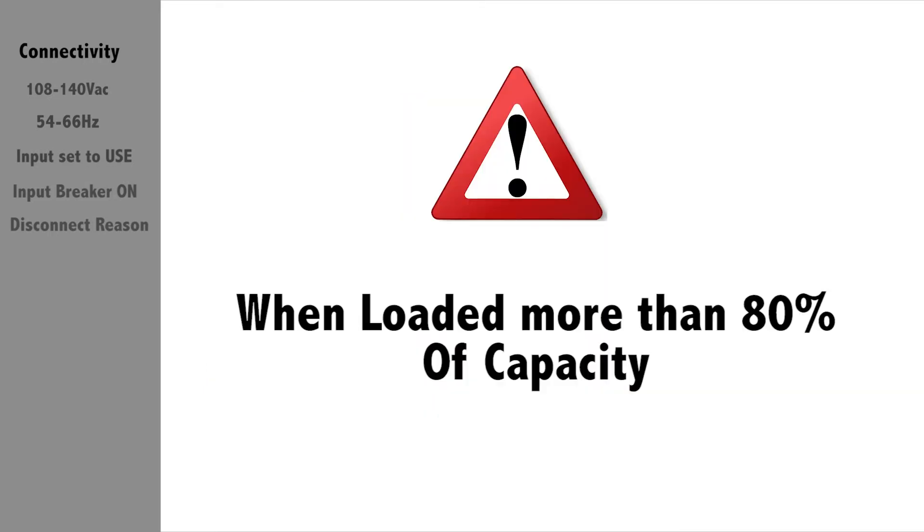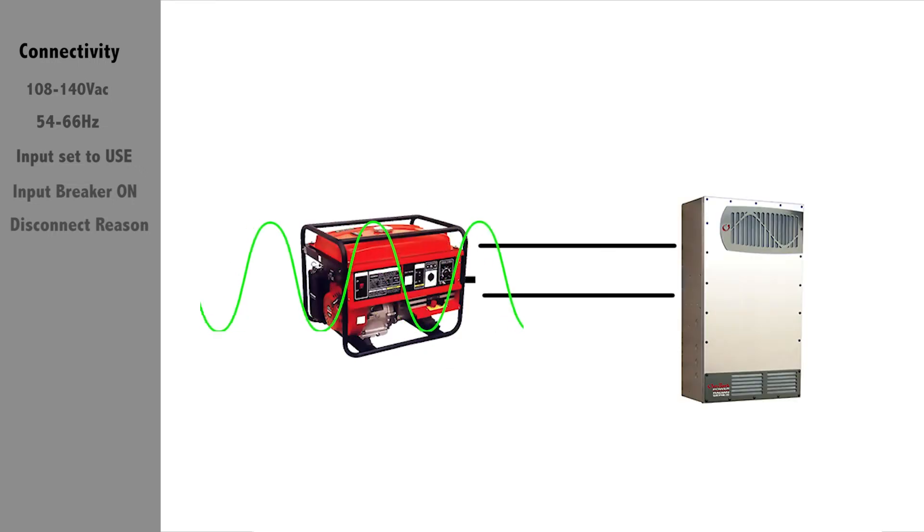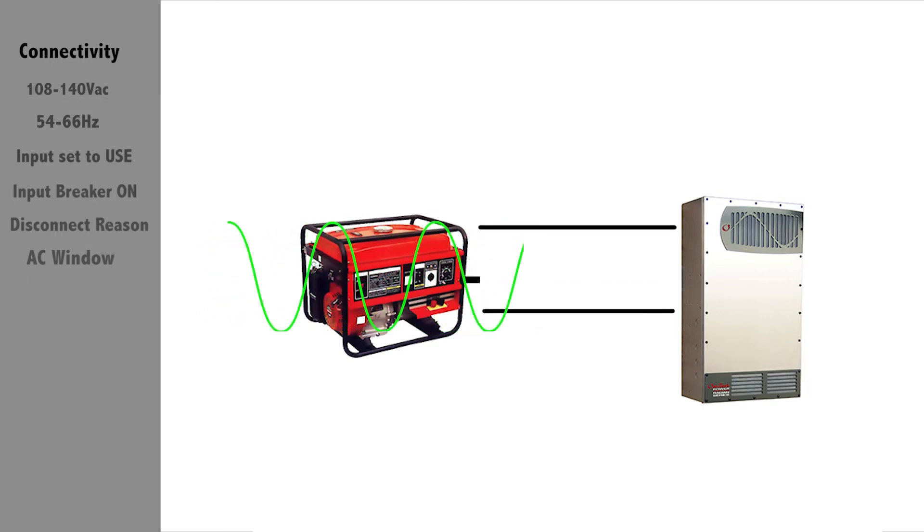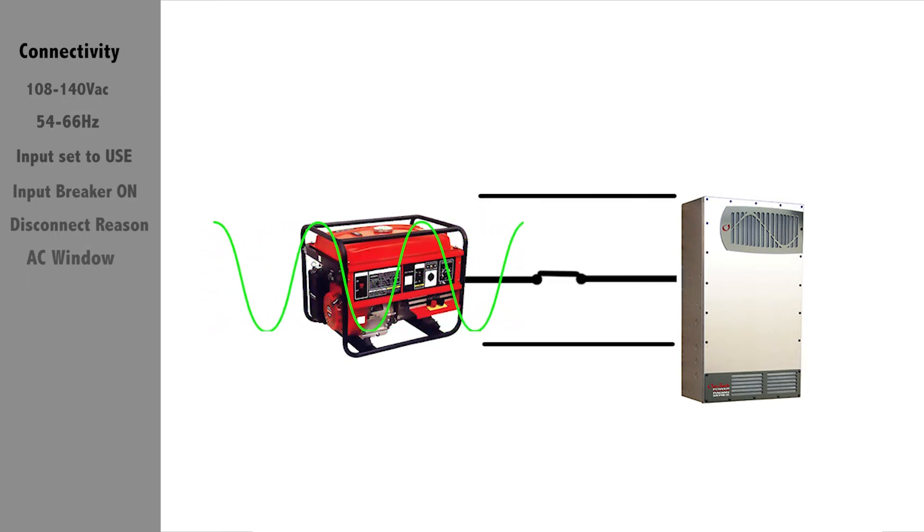Note, some generators are not able to maintain the output voltage and frequency when loaded more than 80% of its capacity for long periods of time. In this case, you may experience nuisance disconnects. The voltage limits can be adjusted to allow a wider voltage acceptance from an irregular generator. However, keep in mind the same irregular power will be passed through your house load.